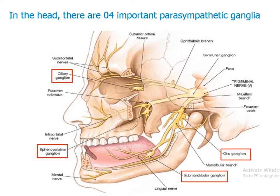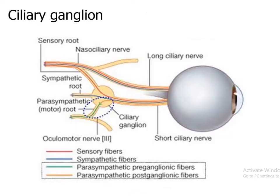Now that you have a clear idea about the cranial nerves, it is easy to understand the parasympathetic ganglia in the head region. The ciliary ganglion lies in the orbit, behind the eyeball.